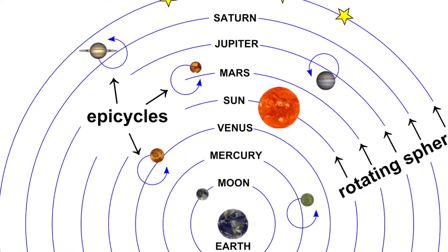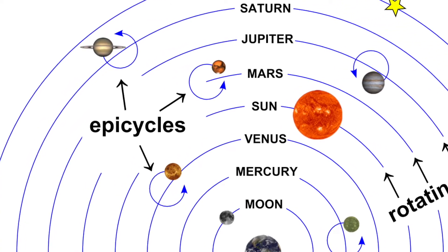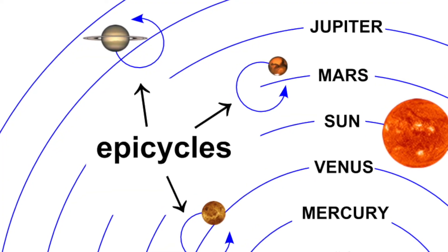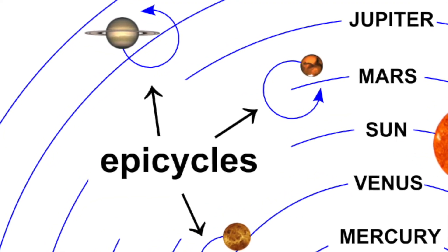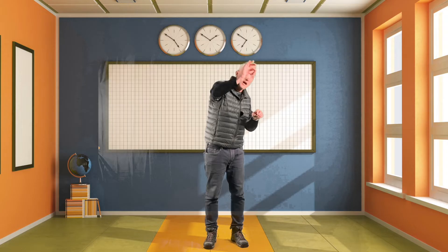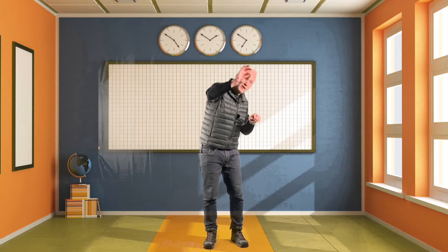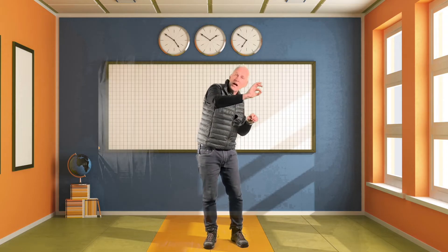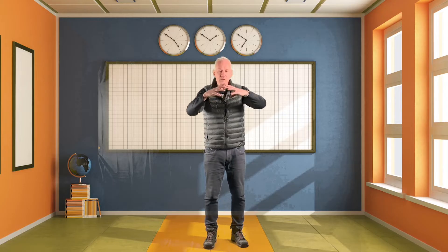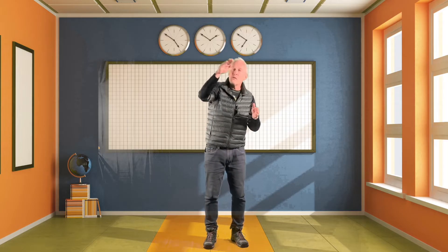That crystal ball would rotate around while the larger crystal ball went around the Earth. So the little ball would go forward for a time, backwards for a time, forward for a time, backwards for a time, and in doing so, and in formulating different sizes of these crystal balls, would account for the motion of the planets.